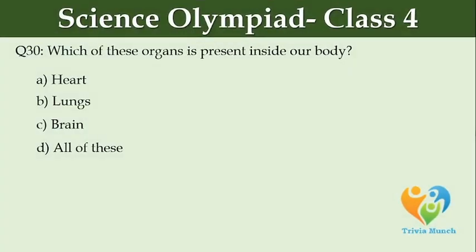Which of these organs is present inside our body? Option A: heart, Option B: lungs, Option C: brain, Option D: all of these.